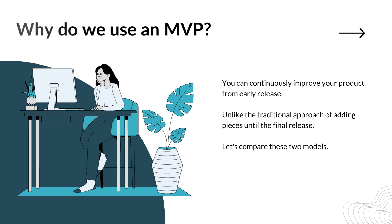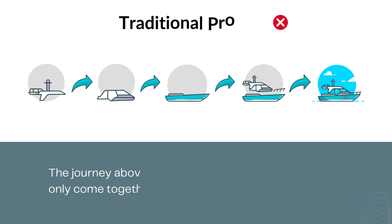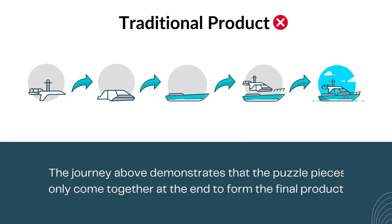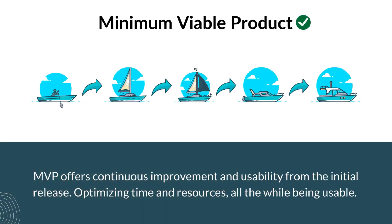Let's compare these two models. Here is a traditional product — this journey demonstrates that the puzzle pieces only come together at the end to form the final product. But with Minimum Viable Product, it offers continuous improvement and usability from the initial release, optimizing time and resources, all the while being usable.